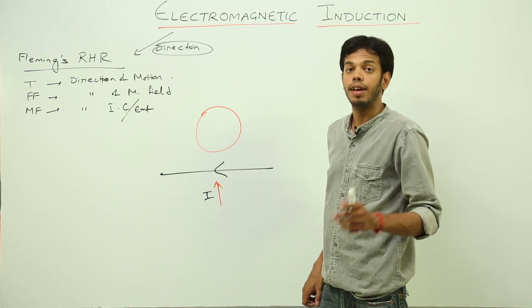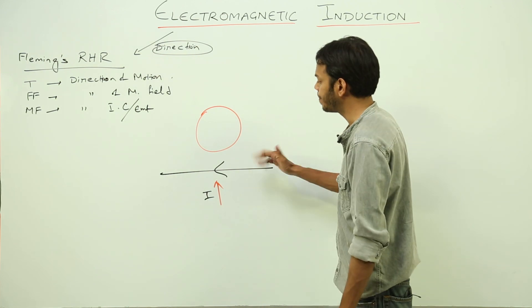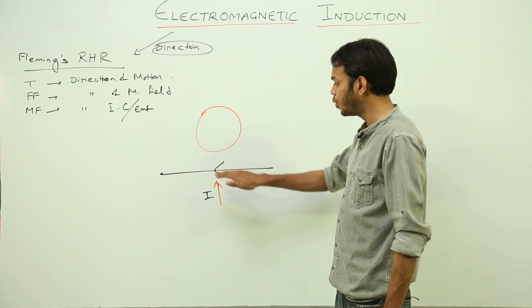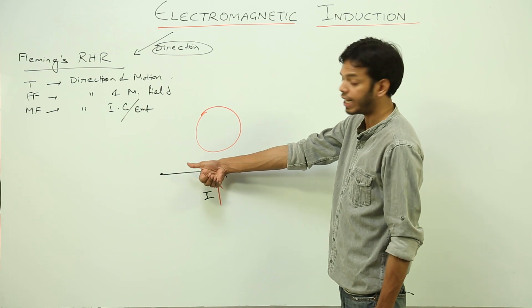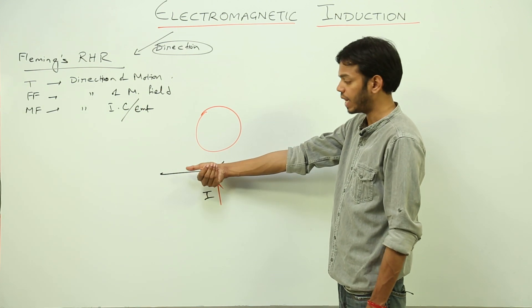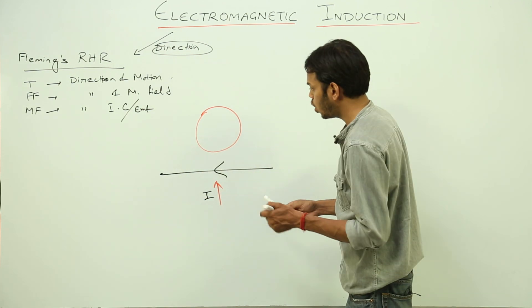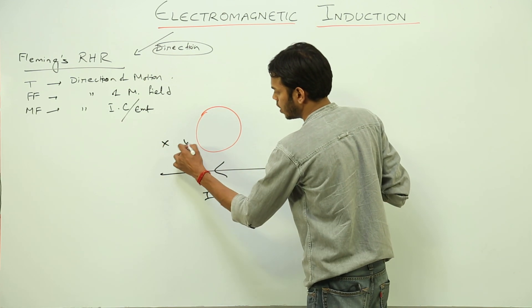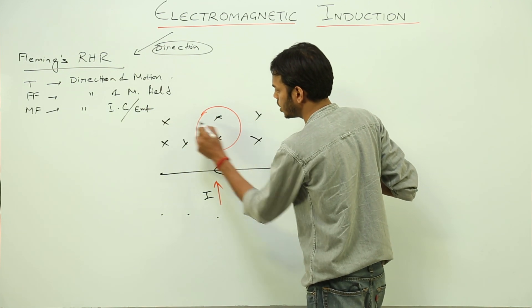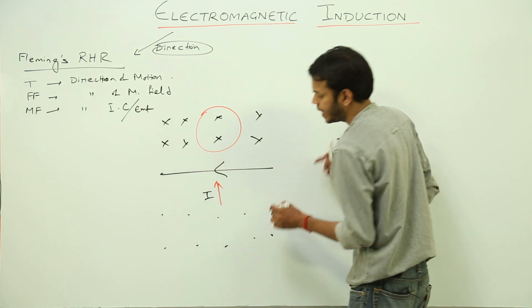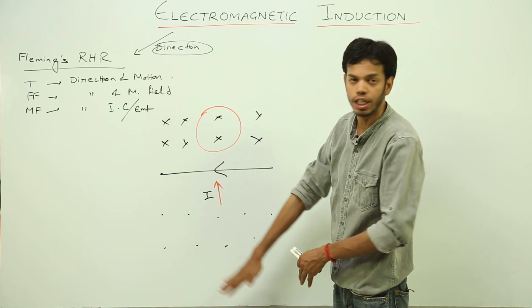First of all, will there be any induced EMF or not? The answer is yes, there will be. Why? Find out the direction of the magnetic field due to this wire. Current is flowing in this direction — use the right-hand thumb rule. The direction of the magnetic field will be vertically downwards here, meaning crosses on one side and dots on the other side.